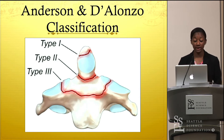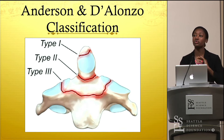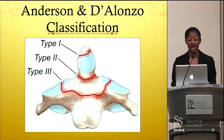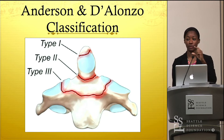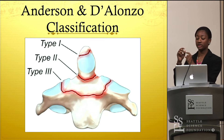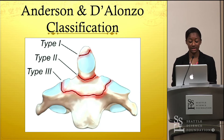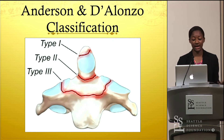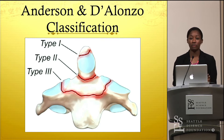Type 1, according to the system, is an oblique fracture through the upper part of the odontoid process. They suggested it results from an avulsion fracture at the point where the alar ligament connects with the odontoid process. Type 1 is considered stable, meaning most likely no neural element will be compromised during this kind of fracture.